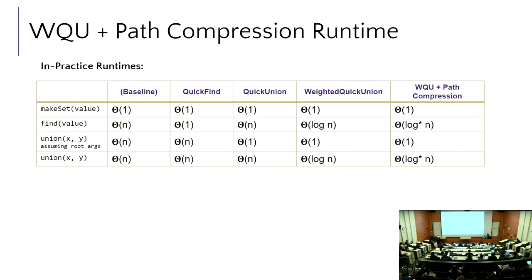Question about find set: you can call find on anything. For example, in that first practice when we had union of two, and two was the only thing in there, I technically called find set on two and it returned itself. Find set can be called on any particular node — all that's happening is going from that node up to the top to find its representative.